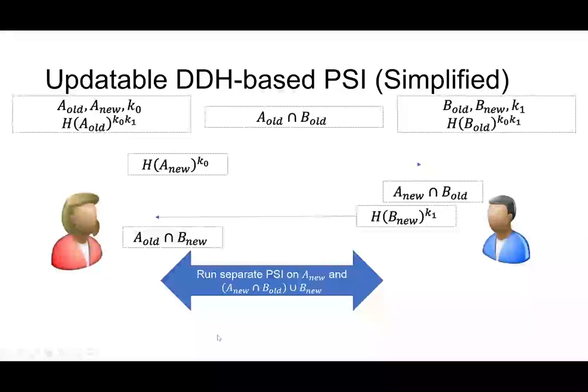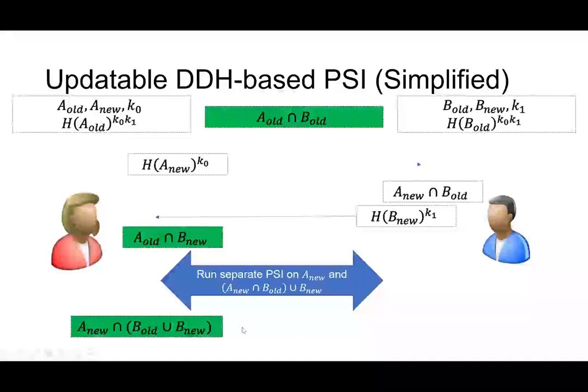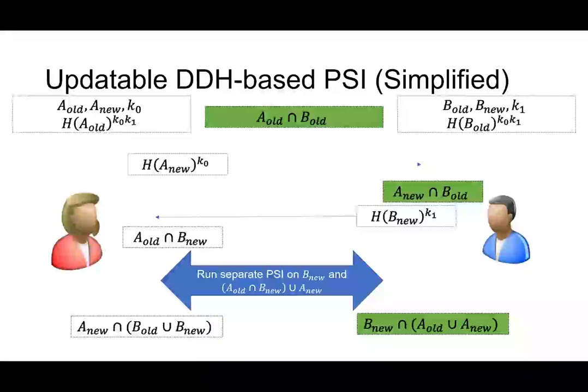So he can replace the B_old set with this A_new intersect with B_old. That will not change the result because it's intersecting with A_new. So this new set, the size of this new set will be the size of A_new plus size of B_new at most. So this new separate PSI will only incur linear to the A_new plus B_new size. Now, Alice learned this A_new intersection with B set. And similarly, Bob learned B_new intersection with A set, and they are done. So they can combine these two results and get a new intersection.